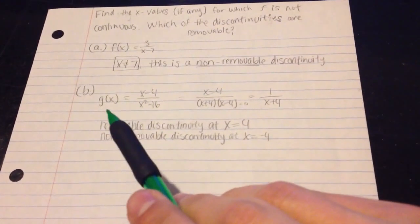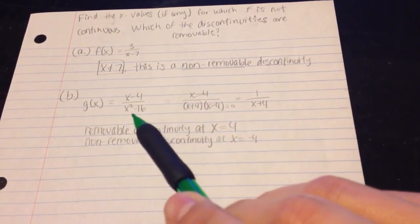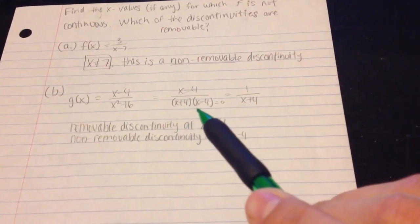Now, with this one, you're given g of x is equal to x minus 4 over x squared minus 16. This is the difference of squares. You can factor this so that you get x plus 4 and x minus 4.